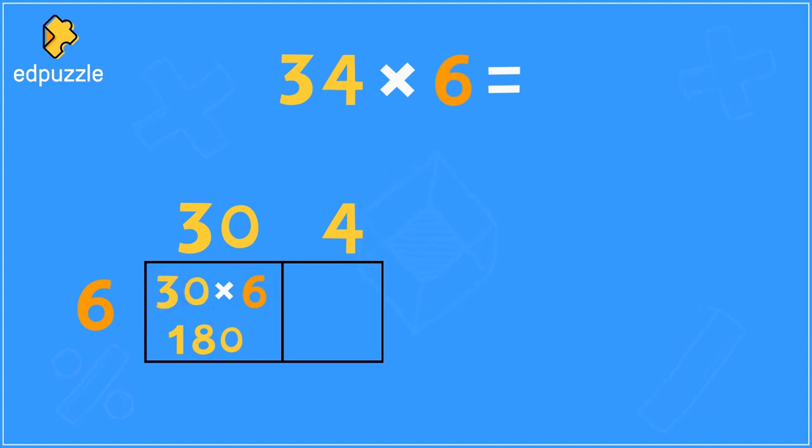Next, what should we multiply in this box on the right? Well, in this box, we're multiplying 4 times 6. What does 4 times 6 equal? Well, 4 times 6 is a multiplication fact you should know. 4 times 6 is 24.